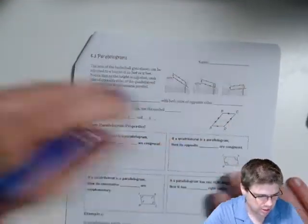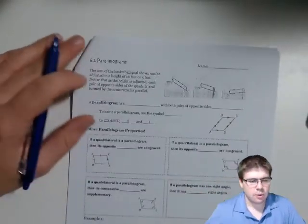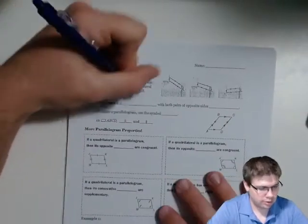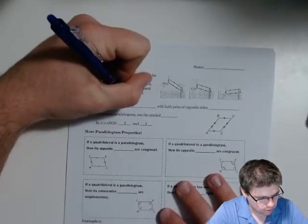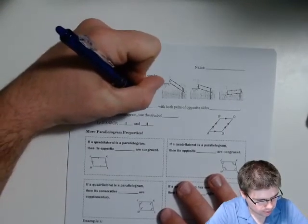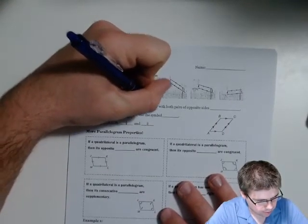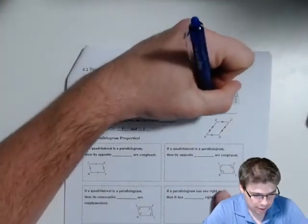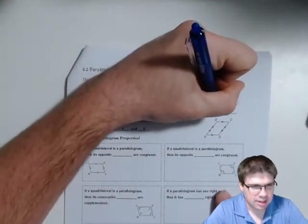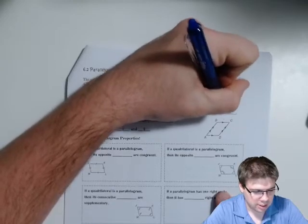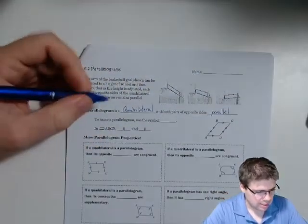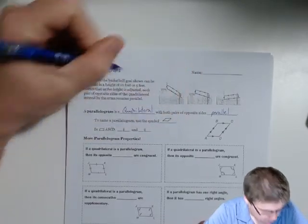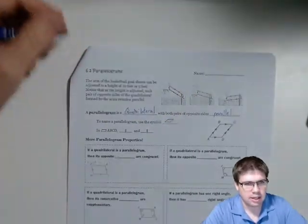These opposite sides are always parallel. So a parallelogram is a quadrilateral with both pairs of opposite sides parallel — that's why it's got 'parallel' in the name. To name a parallelogram, we use a symbol that kind of looks like a parallelogram.